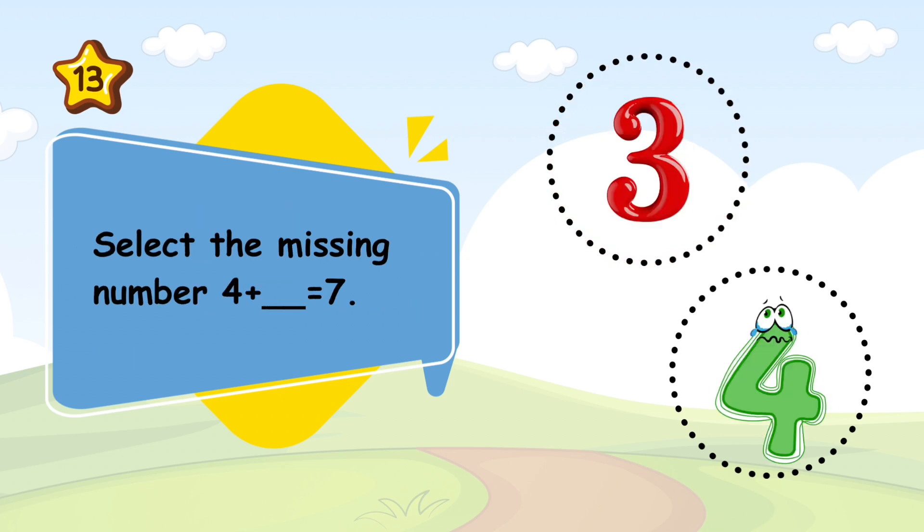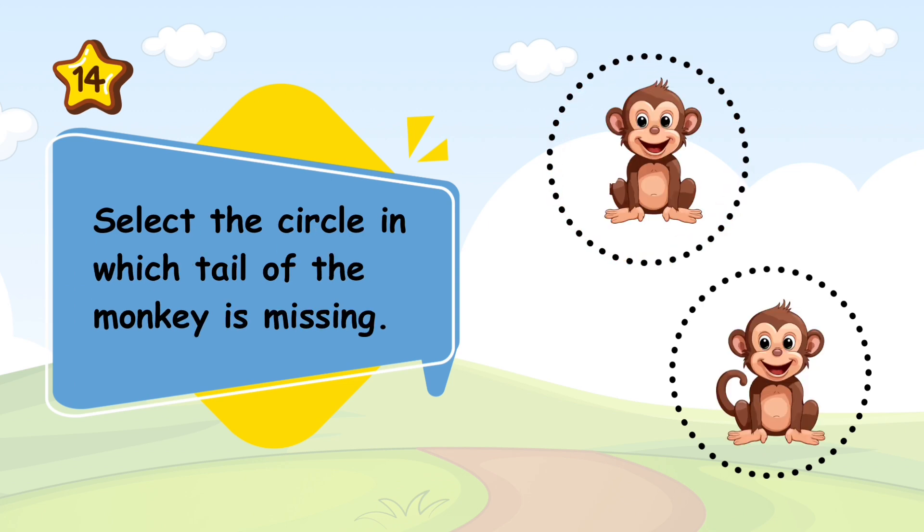Select the missing number. Select the circle in which the tail of the monkey is missing.